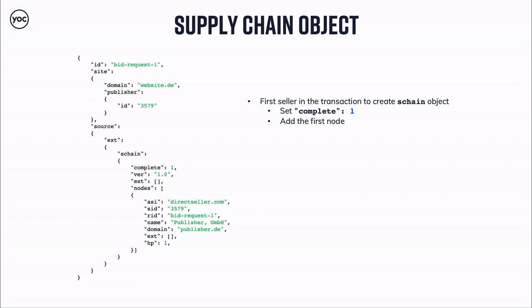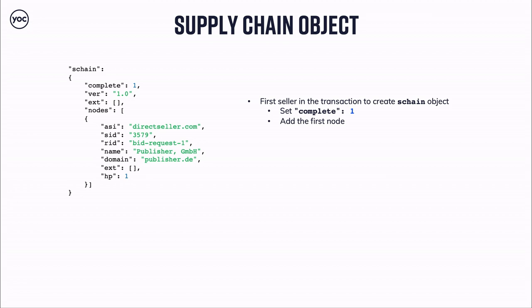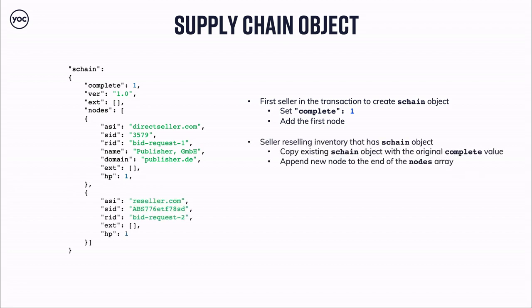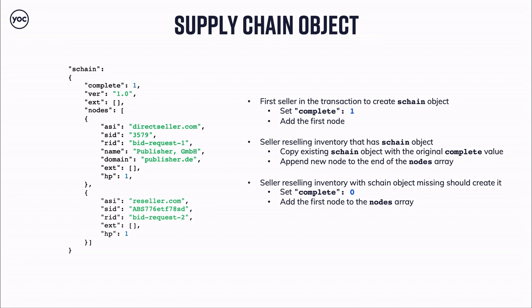Here's a simple flow of how participants add node objects. The first seller in the transaction creates the supply chain object, sets the complete attribute to 1, and adds its node. In our example, Direct Seller adds publisher ID 3579, the bid request ID it generated, and the name and domain of the entity it received the initial ad request from. The reseller in this transaction copies the node it received and adds its own new node. If for some reason the supply chain was not provided in the bid request received by the reseller, it should set complete to 0, add its node, and pass it further downstream.